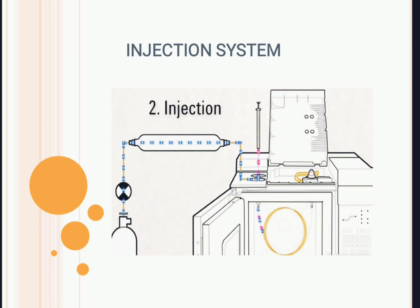Here you can see the micro syringe, whose capacity is in microliters — around 10 microliters. An advantage of GC is that a very small amount of sample is required for analysis. Volatile liquids are mainly used; when injected into the injection port, they are converted into gas, separated over the column, and we get peaks on the recorder device.